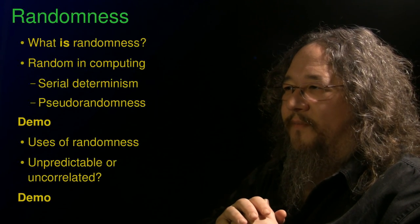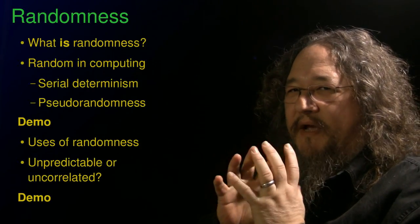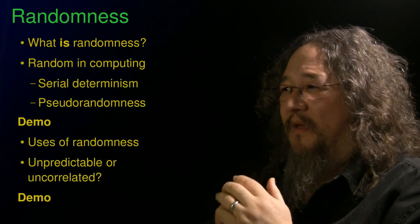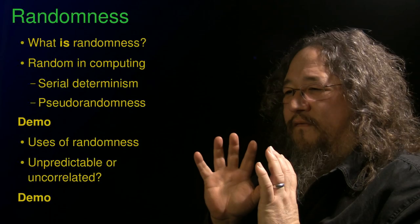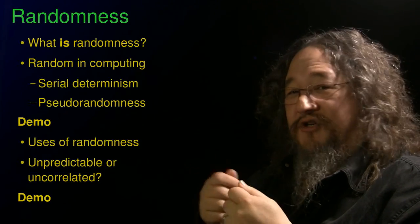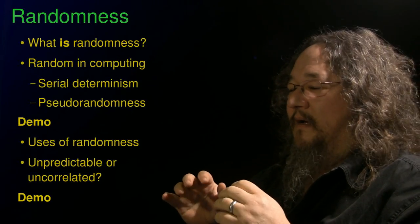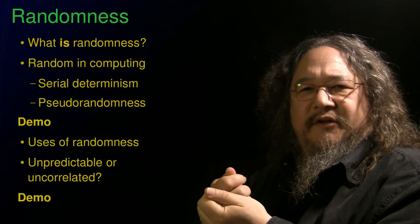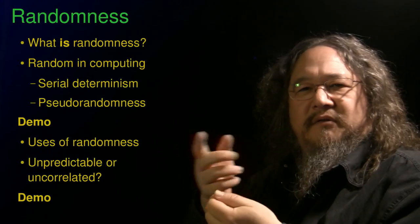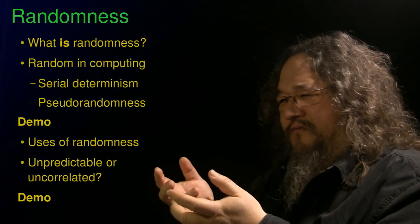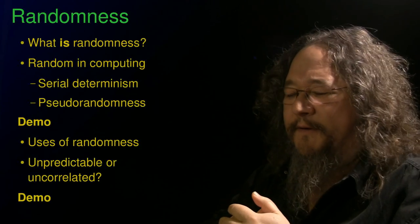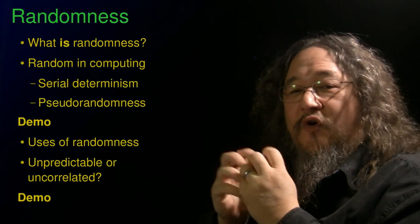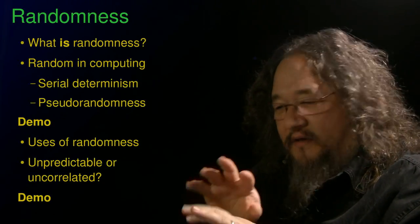What do we use random numbers for? Well, there's at least two big whole categories of uses of random numbers in computers, and they're quite different, and we need to not confuse them. One group is for models and simulations. Computer games, shuffling a deck, solitaire, making a simulation of traffic flow, where when you come to a light, is the light going to be green or red? Well, it depends, we can throw a random number. It's red 60% of the time, green 40% of the time, whatever it is.